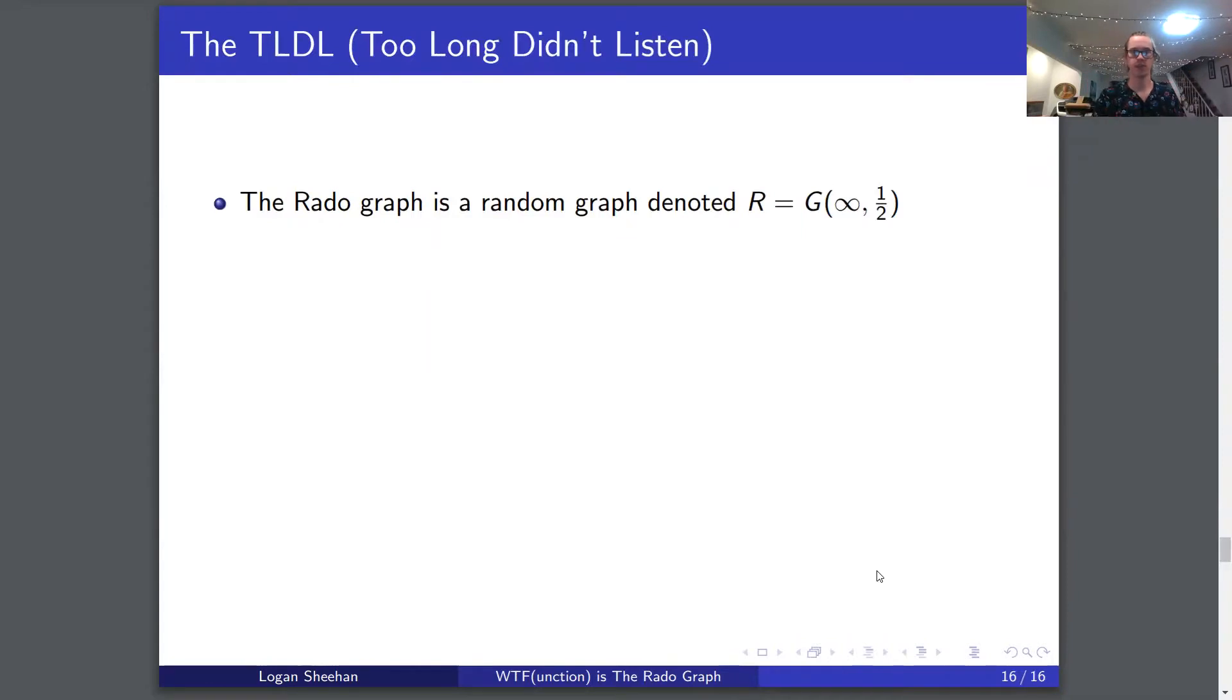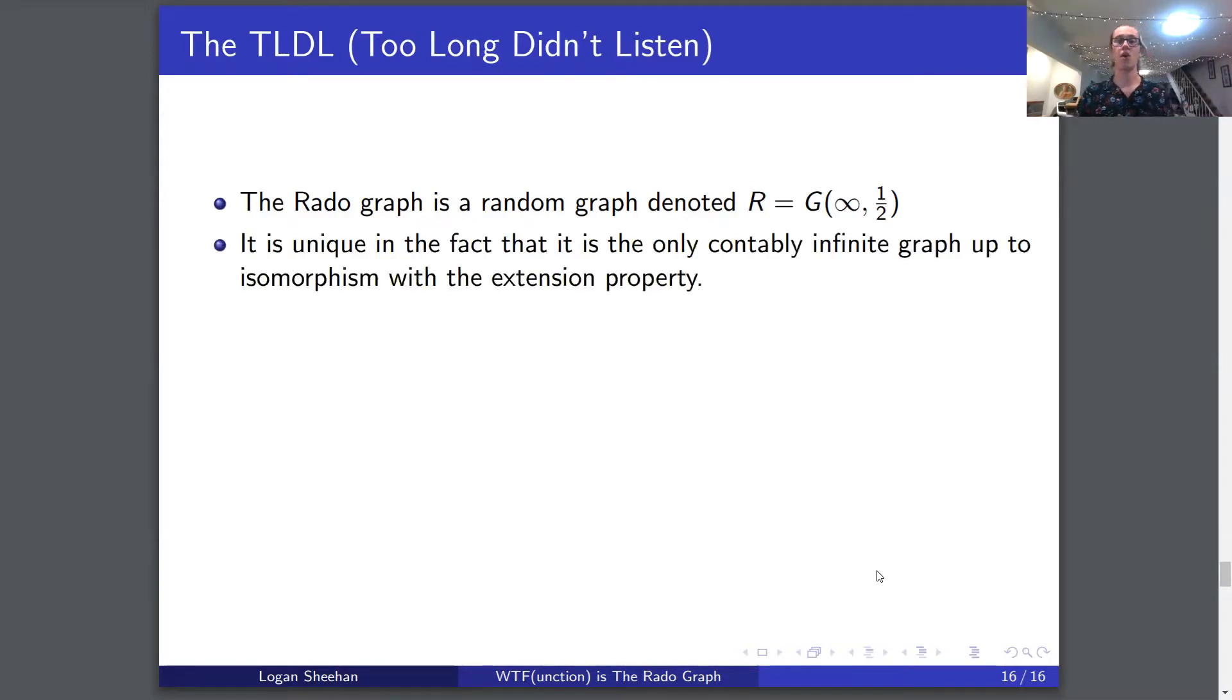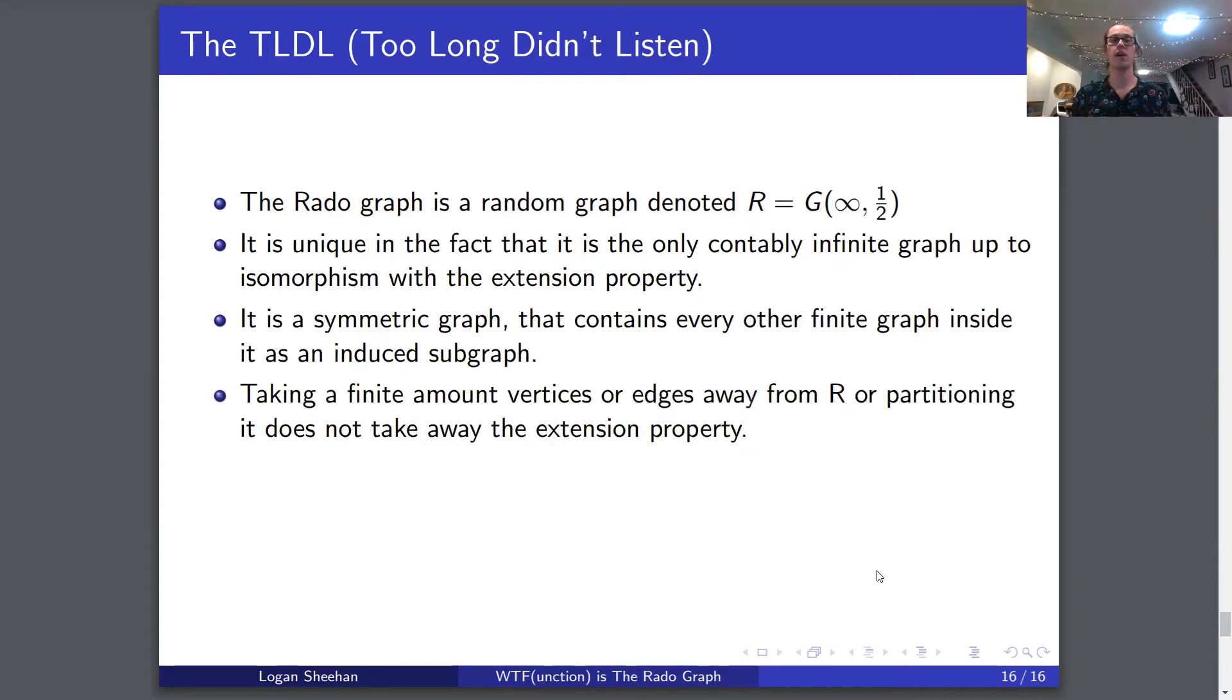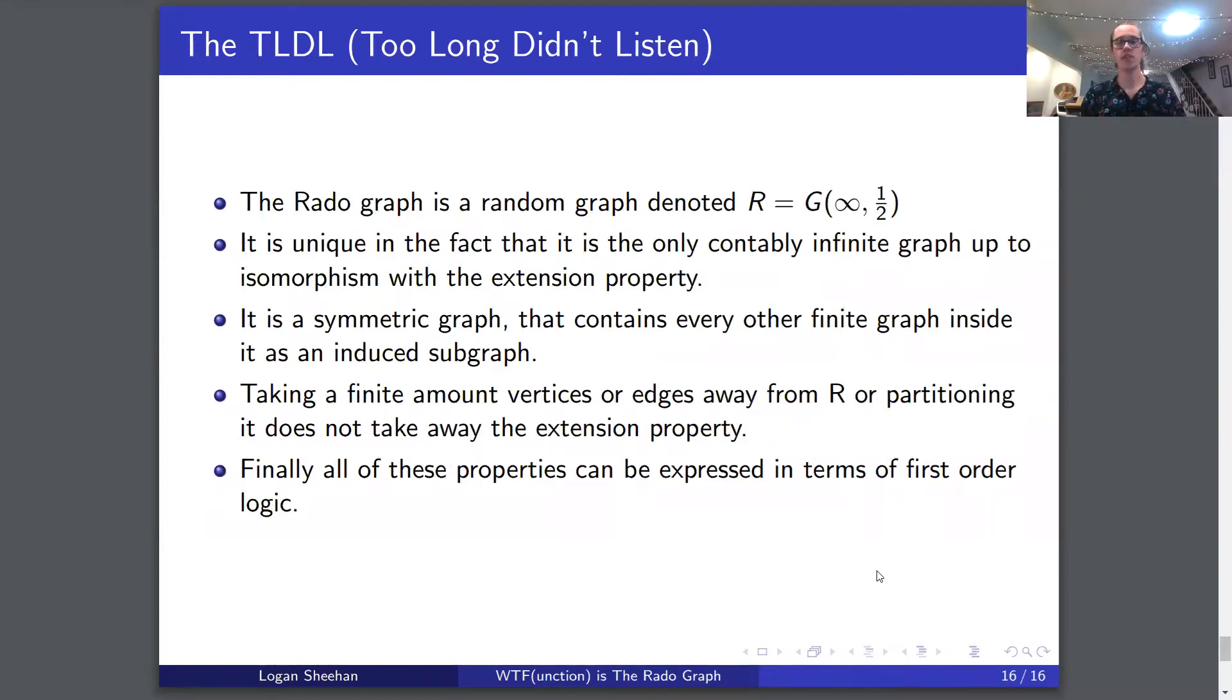Brief overview: The Rado graph is a random graph denoted R equals g infinity one half. It is unique in that it's the only countably infinite graph up to isomorphism with the extension property. It is a symmetric graph that contains every other finite graph inside it as an induced subgraph. Taking a finite amount of vertices or edges away from R, or partitioning it, does not take away the extension property, which means the partitions and changes to it are still isomorphic to R. Finally, all of these properties can be expressed in terms of first order logic. That is the end of my presentation. I know I spoke fast - I had a lot to get through, and there's a 10 minute time limit. Hopefully I made it. As always, my name is Logan, thanks for watching, have a great day.